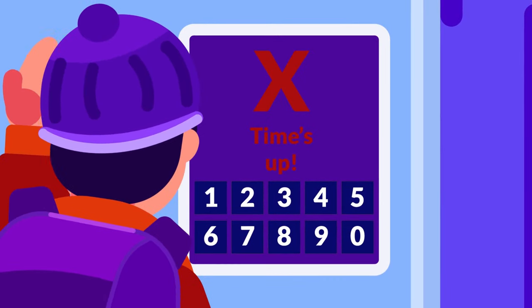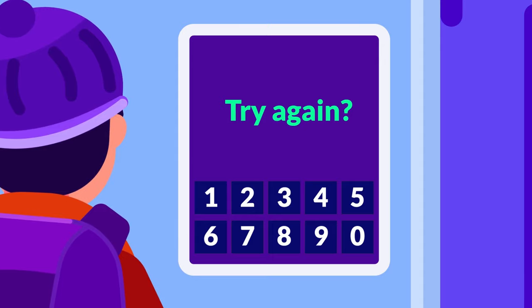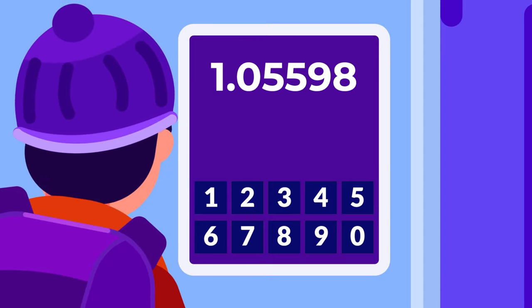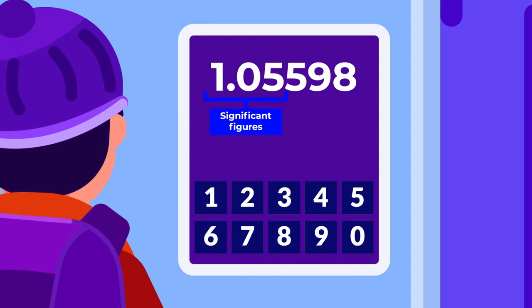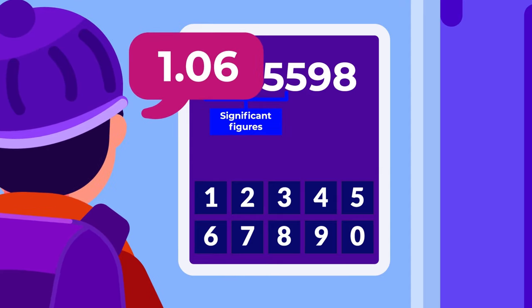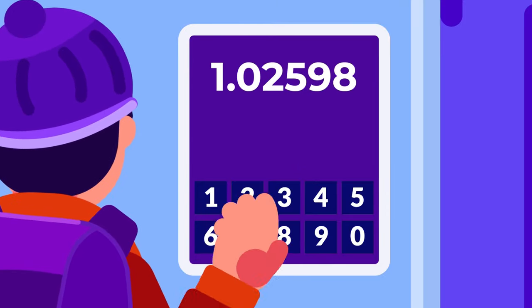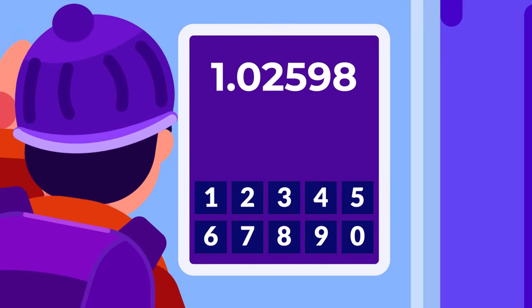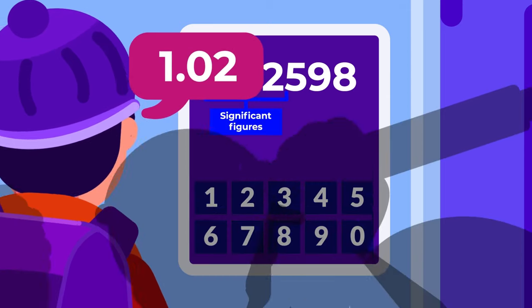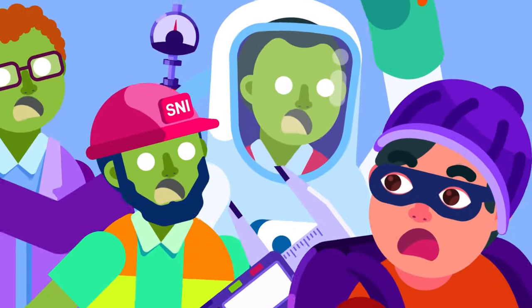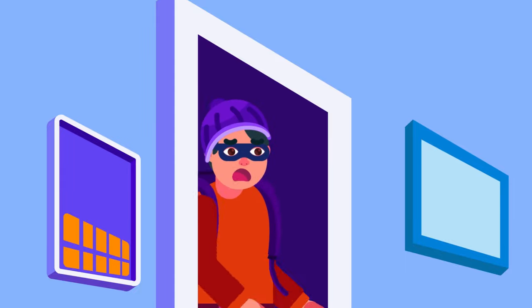But if it's equal to 5, we round it to the nearest even number. So, if we round 1.05598 to 3 significant numbers, we should write 1.06, as 6 is the nearest even. But for 1.02598, the rounding is closer to the even number 1.02.